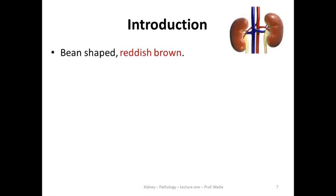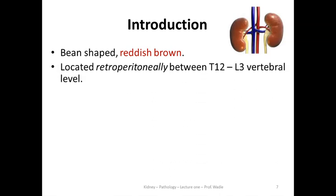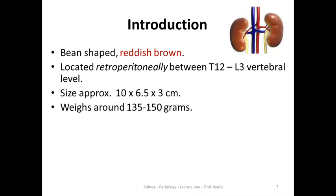The kidneys are bean-shaped, reddish-brown structures. They are located retroperitoneally between T12 and L3 vertebral level. The approximate size of the kidney is 10 cm long from pole to pole, 6.5 cm in width, and the narrowest part is 3 cm. Therefore it is approximately 10 × 6.5 × 3 cm. The kidney weighs around 135–150 grams.